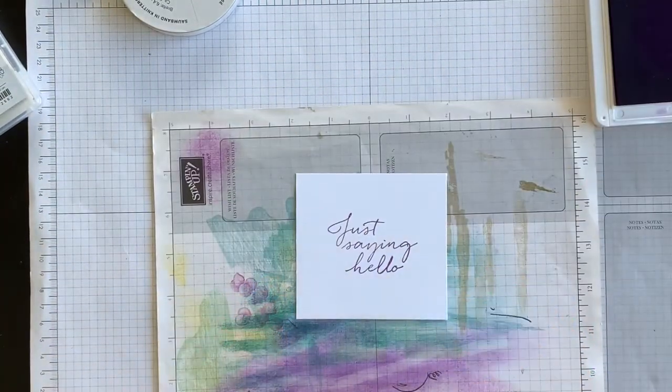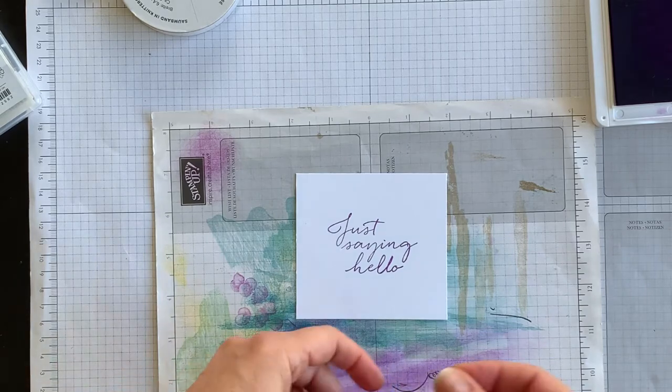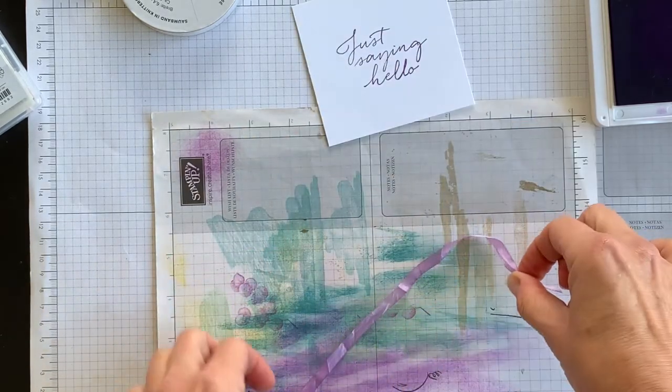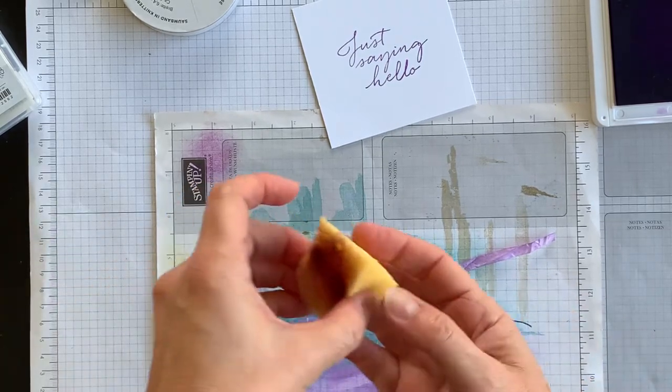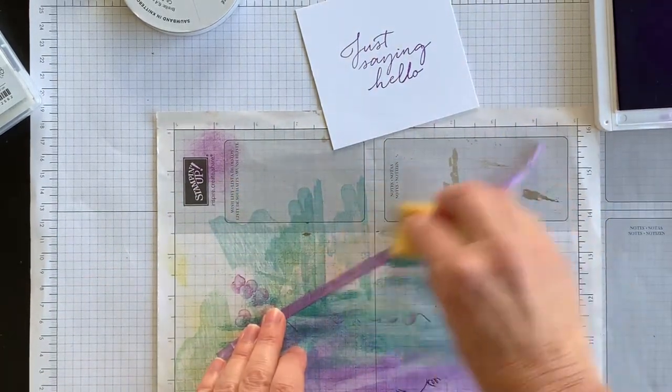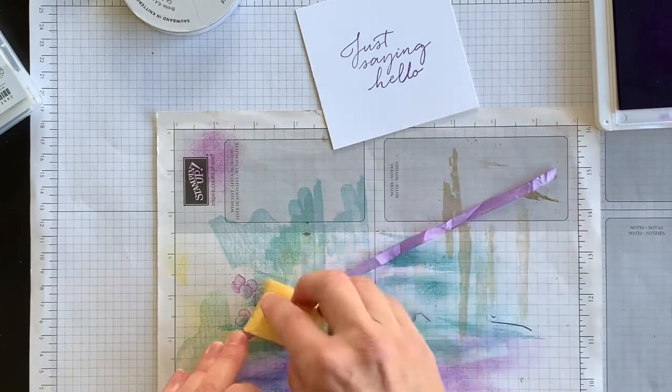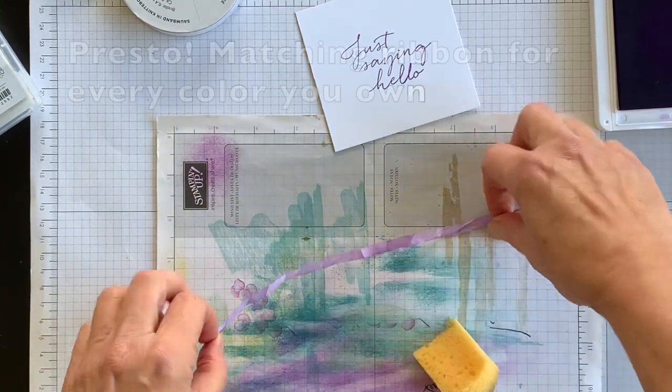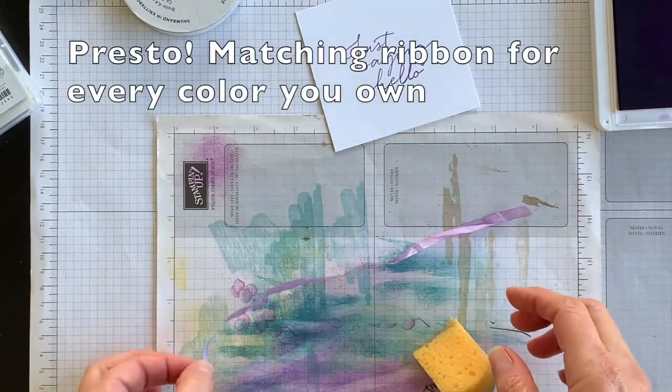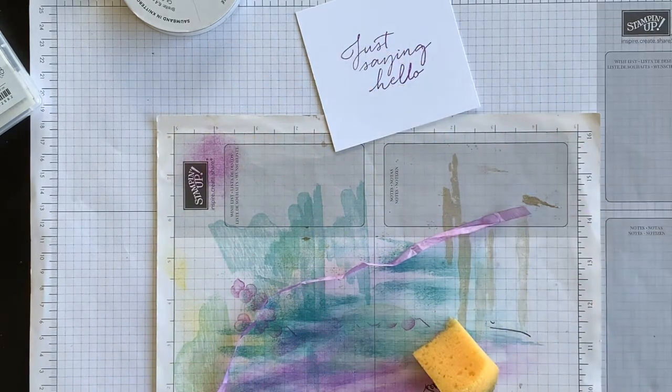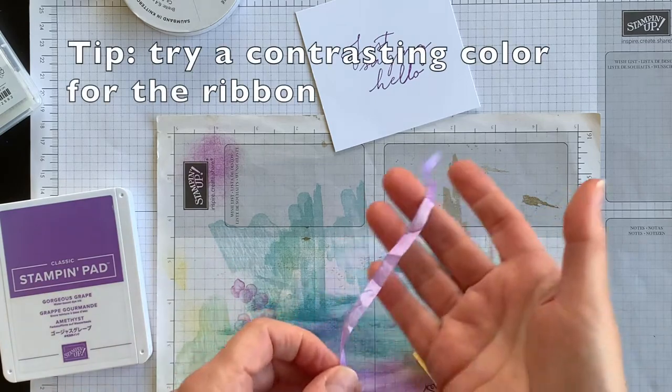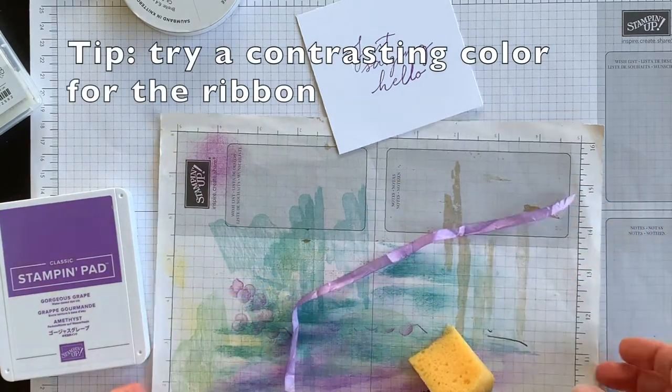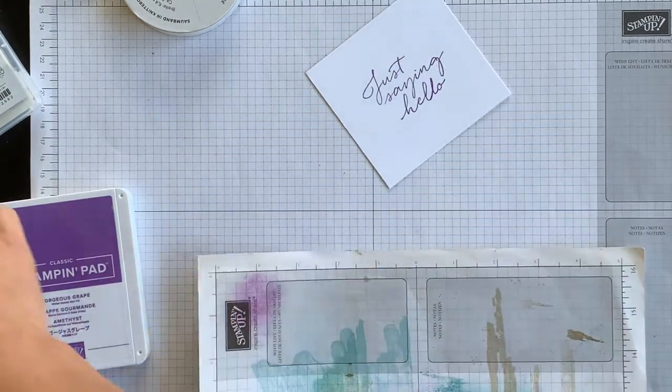You're going to lay the white seam binding down, take one of your Stampin' sponges, and you're going to sponge across the top side and the back side of the ribbon so that you create a Gorgeous Grape matching strip of ribbon. So that's what I would do next.